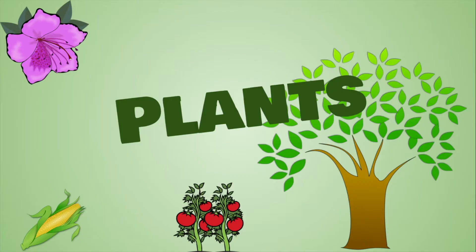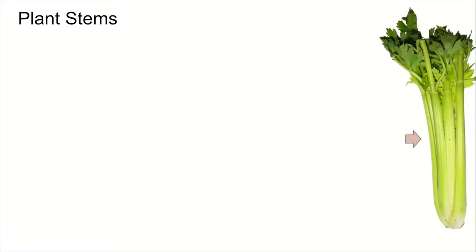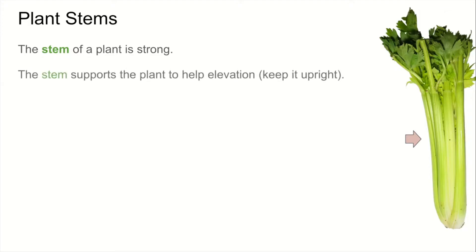Now let's get into plants. We want to give a special shout out to one part of the plant structure that plays a powerful role — ladies and gentlemen, I want to introduce to you the plant stem. I have a celery right here, which is a plant, and this arrow is pointing at the stem of the celery. The stem of a plant is strong, and it needs to be, because the stem supports the plant and helps with elevation — meaning it keeps the plant upright. That's especially important when plants are trying to reach up high to get sunlight.